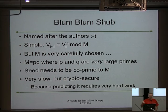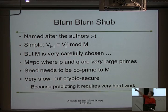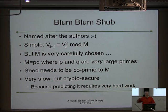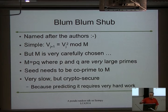Blum Blum Shub — it's got a great name. Two guys called Blum, mathematicians. Again, it's the same pattern: V(j+1) = V(j)^2 mod something. The interesting bit is that if you choose extremely carefully two very large co-primes to mod the answer by, and choose your seeds much more carefully than people generally do, you will get very, very high quality output — really slowly.